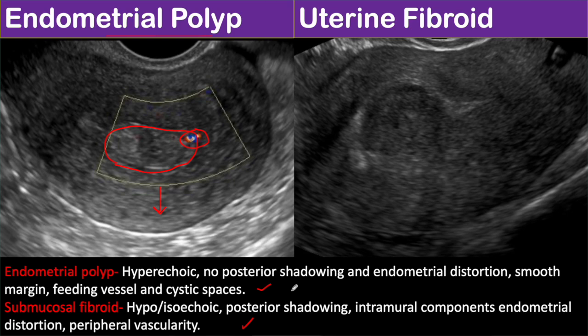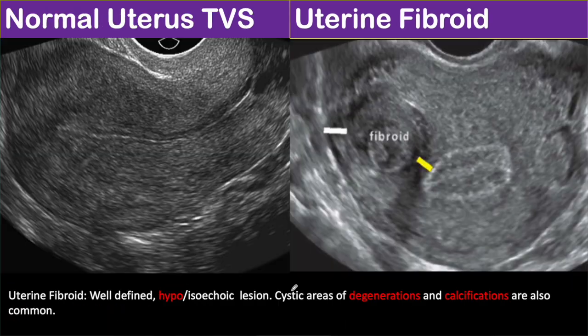Now let's again come to uterine fibroid. This is a case of intramural fibroid, as the lesion is predominantly within the myometrial layer.